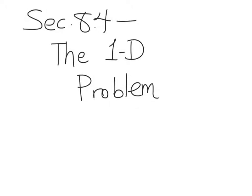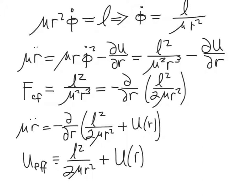In this section, we'll see how to convert the central force problem, which we've already converted into a two-dimensional problem, into a one-dimensional problem. Recall we can write the system's angular momentum as mu r squared phi dot — that's L. So that means we can make the replacement: whenever we see phi dot, we can replace that with L, the angular momentum of the system, which is a constant, divided by mu r squared. We can come back to our dynamical equation for r: mu r double dot equals mu r phi dot squared minus the partial derivative with respect to r of the potential energy function.